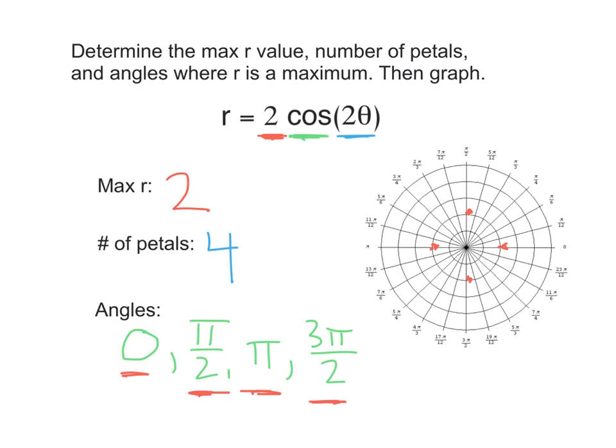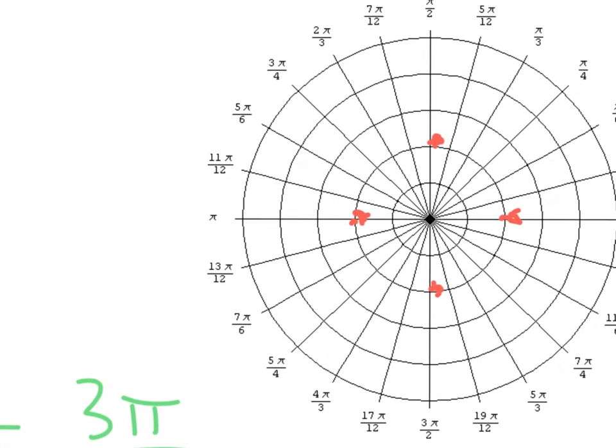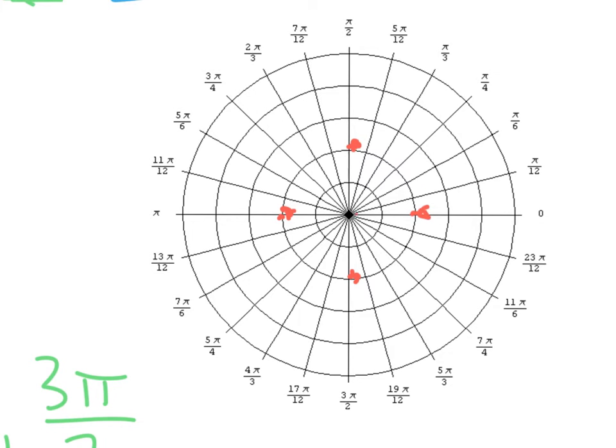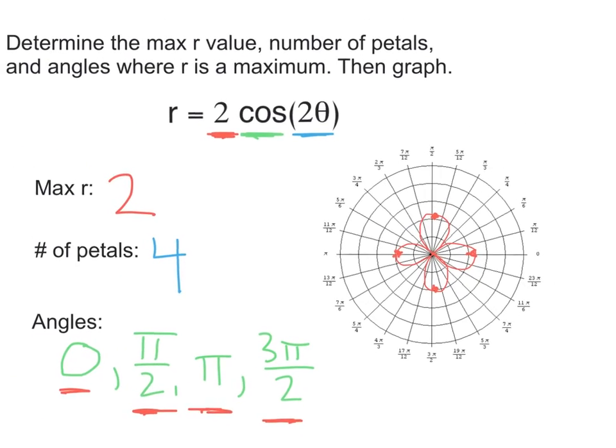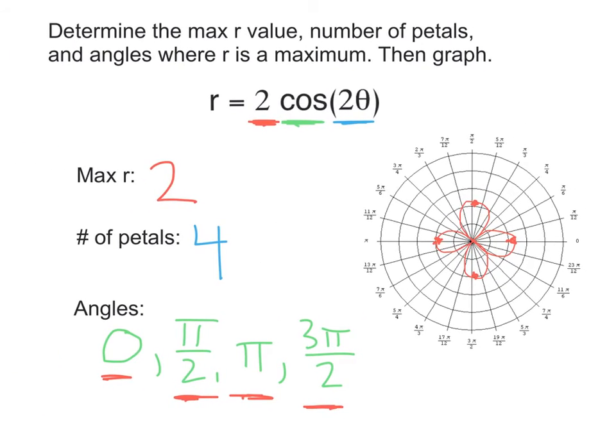Now, since we know that this is a flower graph, all we can do from here is go ahead and draw our beautiful petals. And sketching it is going to be plenty good enough for us. So, after connecting those, we've got our polar rose graph, two cosine two theta, right here.